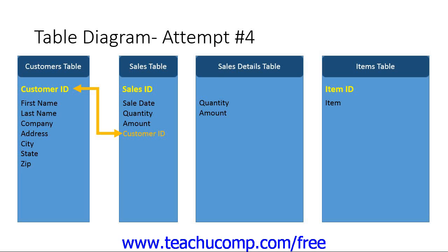Next, examine the relationship between the items table and the sales details table. For each item ordered in a transaction shown in the sales details table, it must make a reference to the unique item within the items table. So you will add the foreign key field of Item ID to the sales details table. Then you can join the tables through their shared or common fields. Let's examine how the data table diagrams in the data model may look after performing these two tasks.